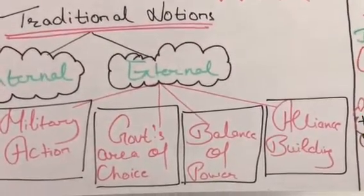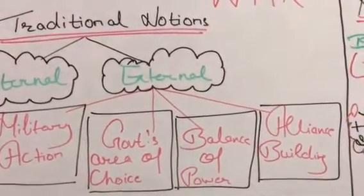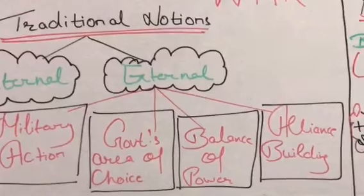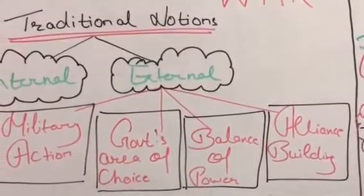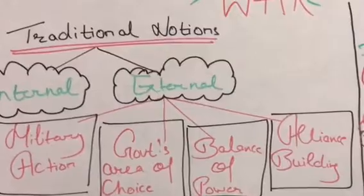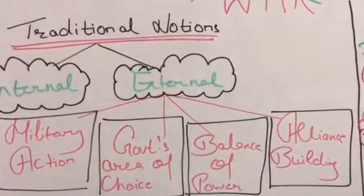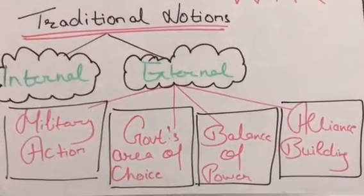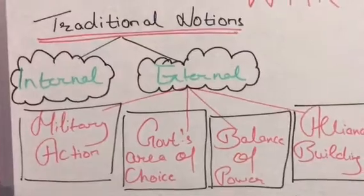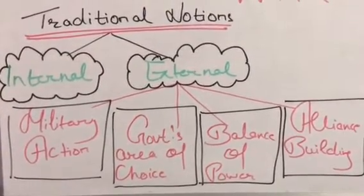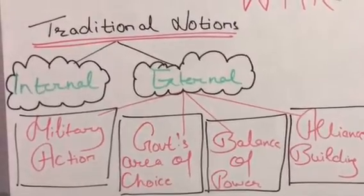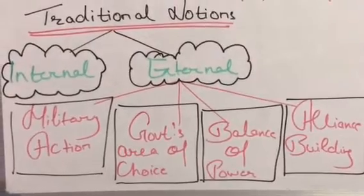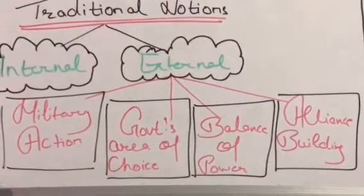The second major element is government's area of choice. When a country is attacked, choices come in front of the government. There are many alternatives, and three main ones: the first is to surrender — you have to stop your power and your war. Governments usually surrender even if their power is strong, rather than compromising their foreign policy or external policy. The second is to fight in the war.